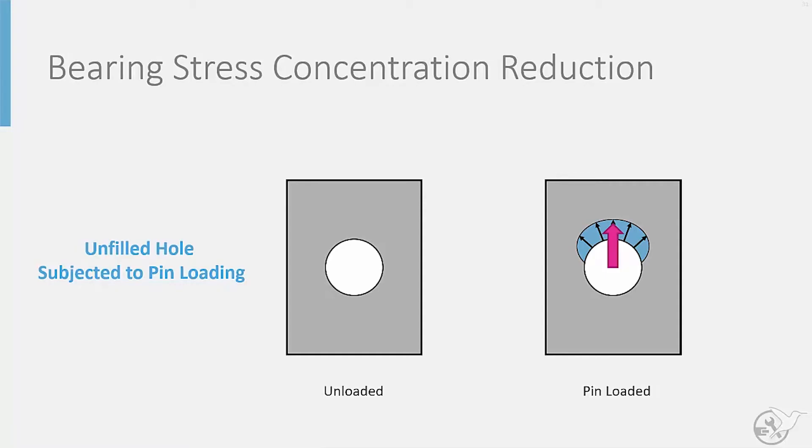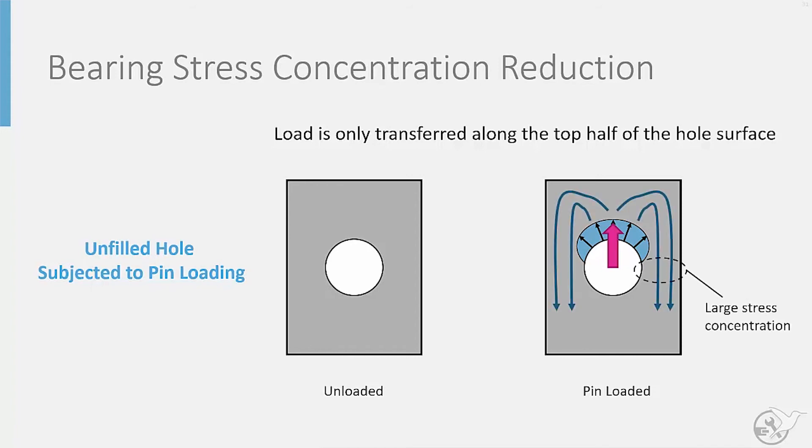If the fastener hole is unfilled, load transfer between the rivet and the sheets only occurs on one side of the fastener hole. This concentrates the load in the sheet, resulting in a large stress concentration.